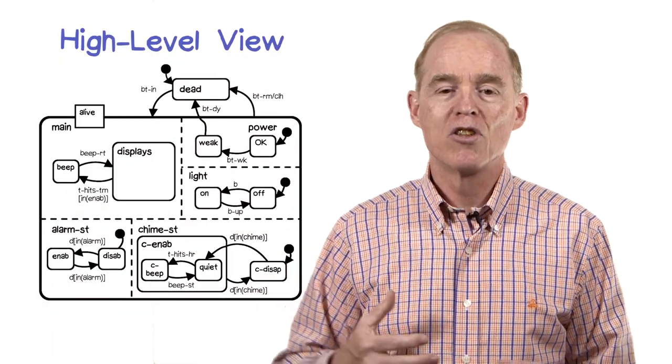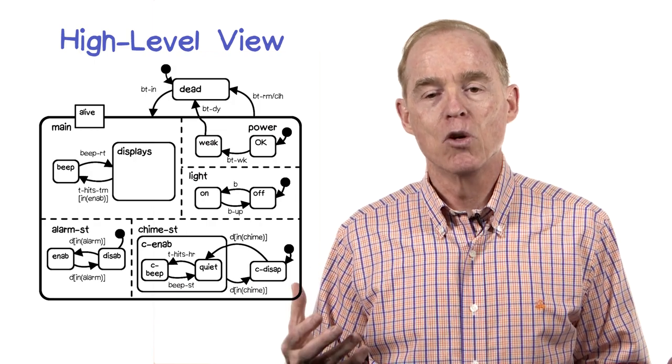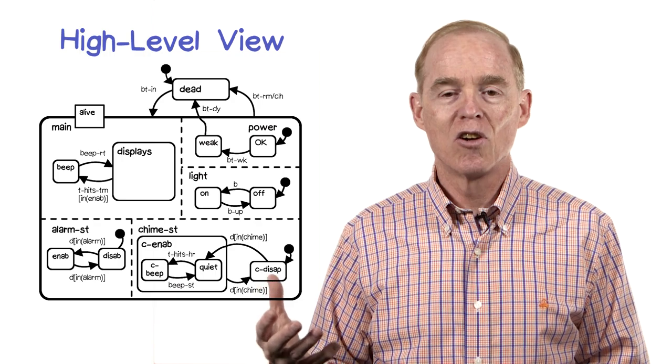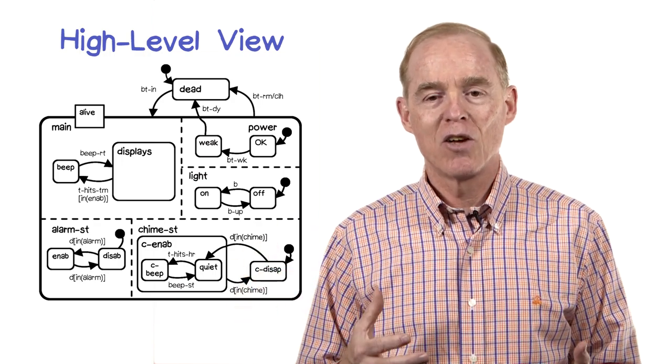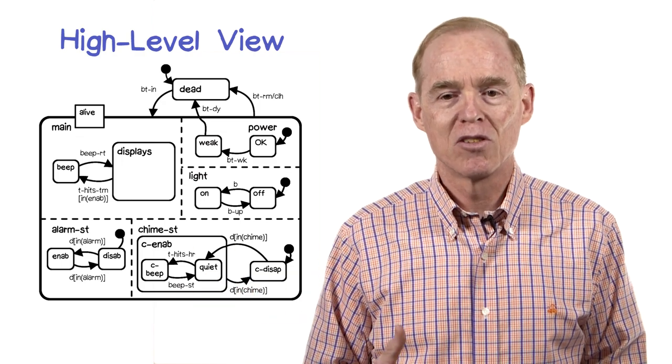From the paper, here's the example of the digital watch from a high level view. Notice that there are really two states here. One is the dead state, and one is the alive state, separated by whether the battery is placed inside or so on.